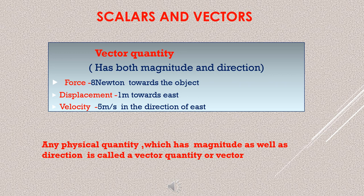Similarly, displacement — if I say I displaced that box, you will quickly ask in which direction, because displacement is a vector quantity, which is complete with magnitude and direction. Velocity is also like that — it is a quantity having both magnitude and direction. Such quantities which require direction in addition to magnitude are known as vector quantities.